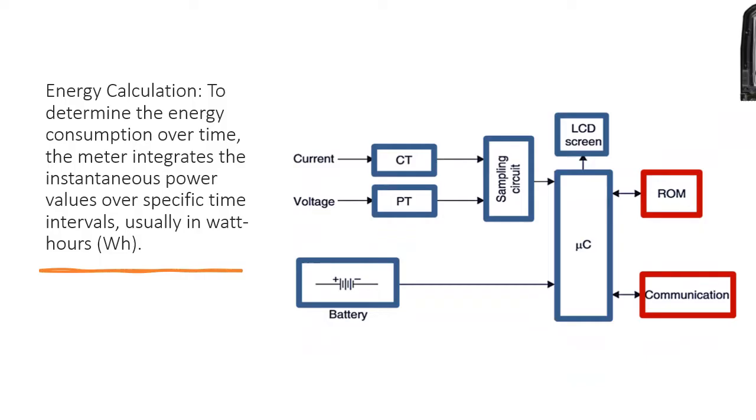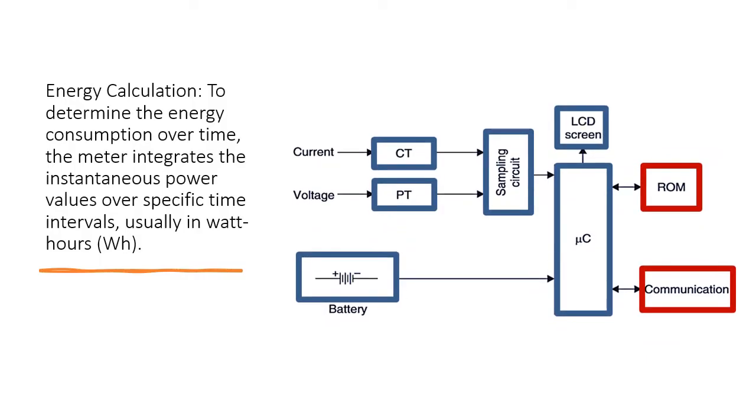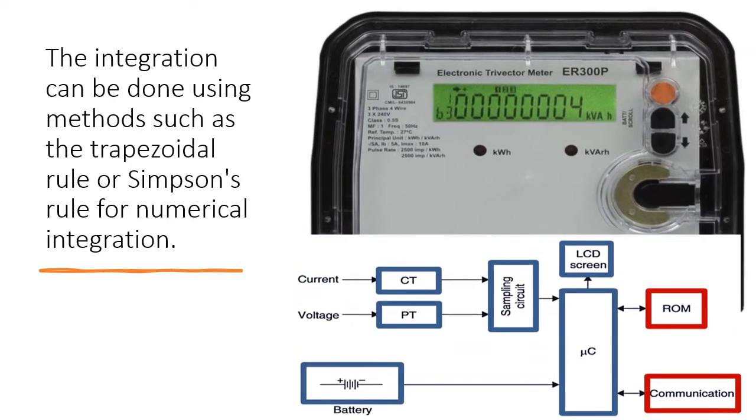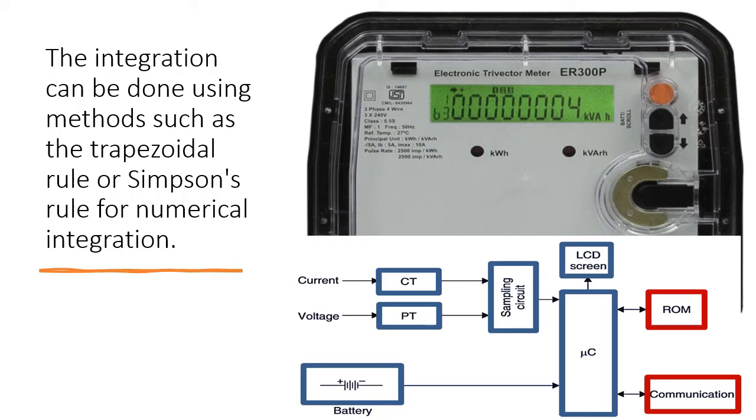To determine the energy consumption over time, the meter integrates the instantaneous power values over specific time intervals, usually in watt hours (WH). The integration can be done using methods such as the trapezoidal rule or Simpson's rule for numerical integration.